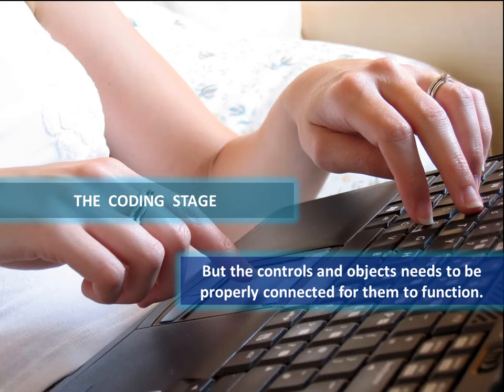Once that interface is developed, we then have to code it. We have to connect those objects to one another and make them do something — and this is where the programming language comes into place. We might program something in Visual Basic or in C Sharp, and using Microsoft Visual Studio, the interface may look identical, but the programming language used — whether it be Visual Basic or C Sharp — will differ. We use a particular language to connect all these objects and make them function.